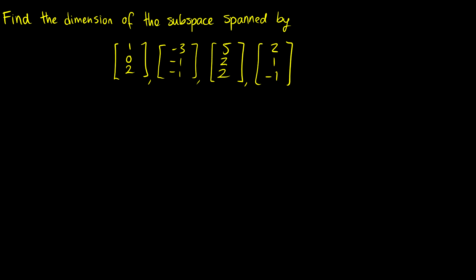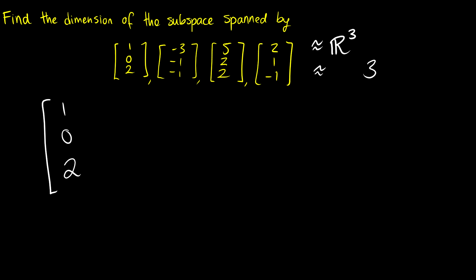Let's find the dimension of the subspace spanned by these four vectors. The dimension is going to be the number of vectors we need to form a basis. I see three entries in each vector, so this is probably R3, and we're probably going to have the dimension equal to 3. But we can't make this claim yet, because this might be a subspace that is just a plane in R3 through the origin. We'll need to row reduce and check for linear combinations.